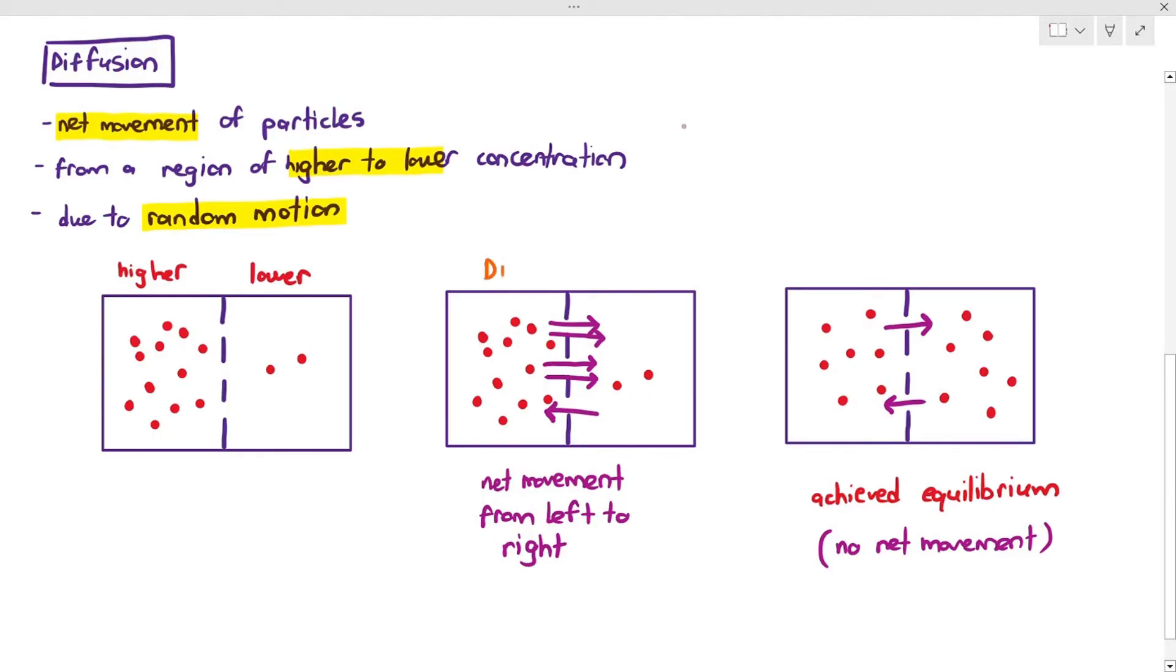The diagram in the middle tells us that diffusion is still occurring because there is net movement. But once it has achieved equilibrium, diffusion is set to stop.